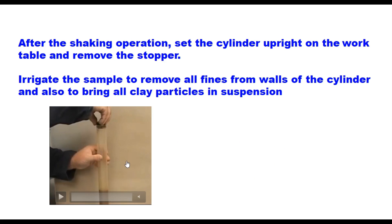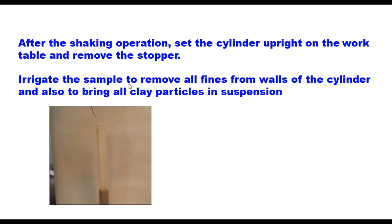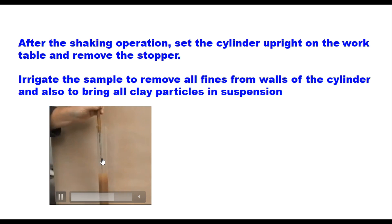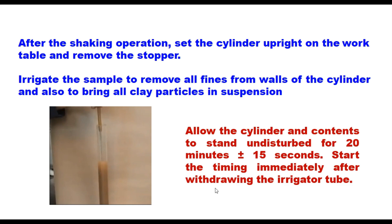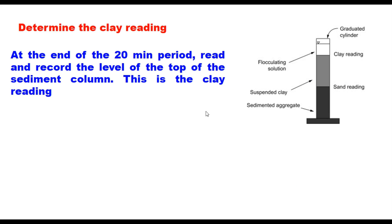After shaking, set the cylinder upright, remove the stopper, and irrigate the sample to remove all fines from the walls and bring all clay particles into suspension. Raise the irrigator slowly without shutting off the flow, maintaining the liquid level at 381 mm (15 inches) while withdrawing the irrigator. Allow the cylinder and contents to stand undisturbed for 20 minutes ± 15 seconds, starting immediately after withdrawing the irrigator tube. The three layers will be: sand or sedimented aggregate at the bottom, suspended clay in the middle, and flocculation/working solution at the top.